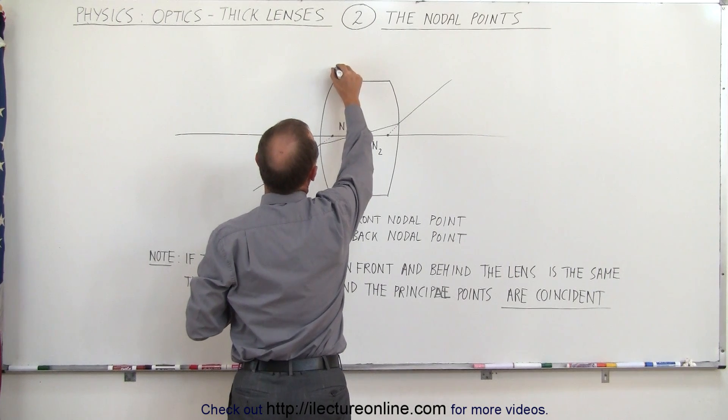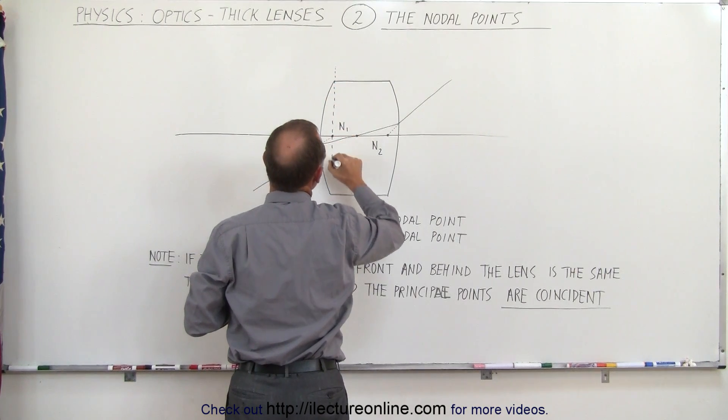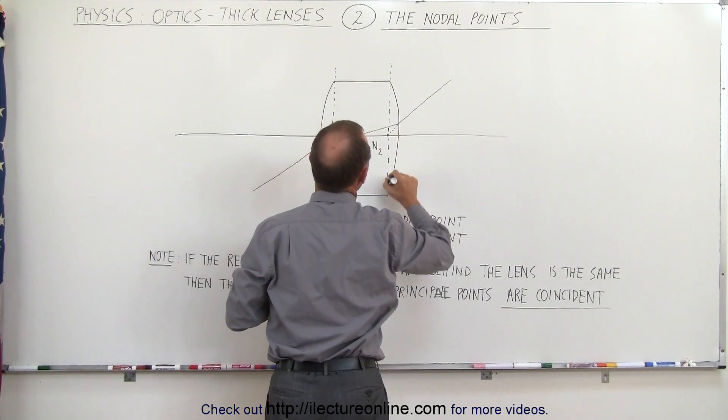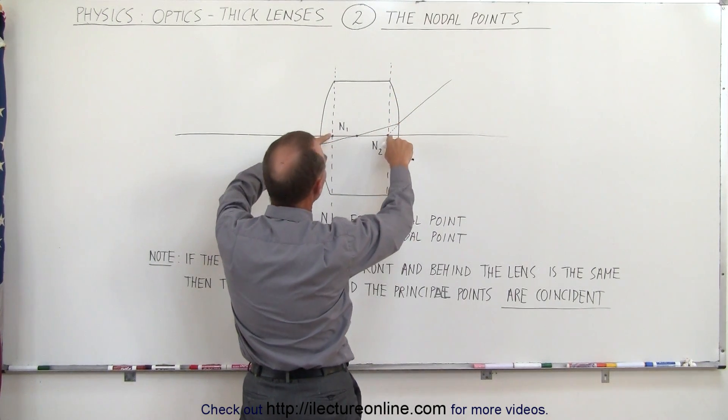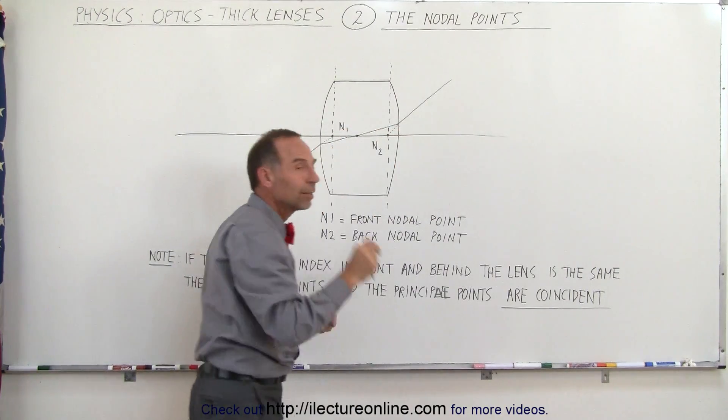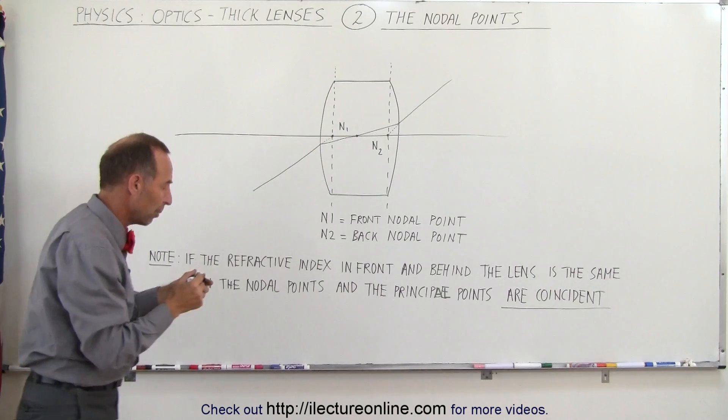So what we can say is if we draw these rays like this, then this here would be the front principal plane and this here would be the back principal plane, and the nodal points would also be the principal points on the front and the back, the primary and secondary principal points.